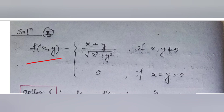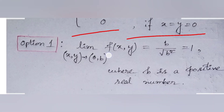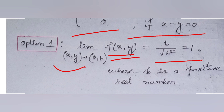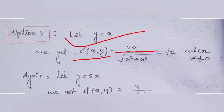For option one: the limit of f(x,y) as (x,y) → (0,b) for positive real b equals b/√(b²) = 1, so option one is true. For option two, let y = x: then f(x,y) = 2x/√(2x²) = √2 for x ≠ 0.